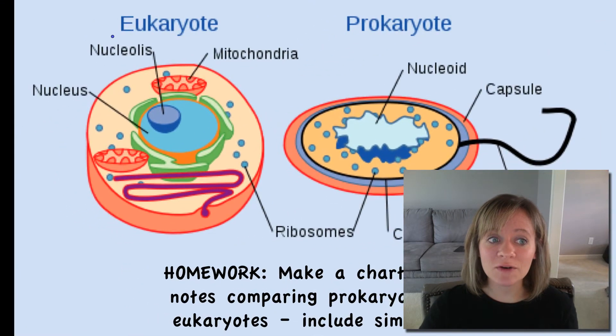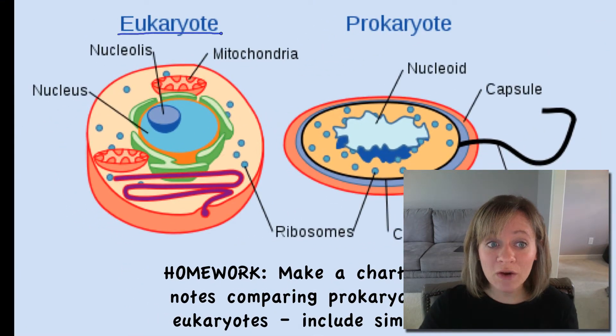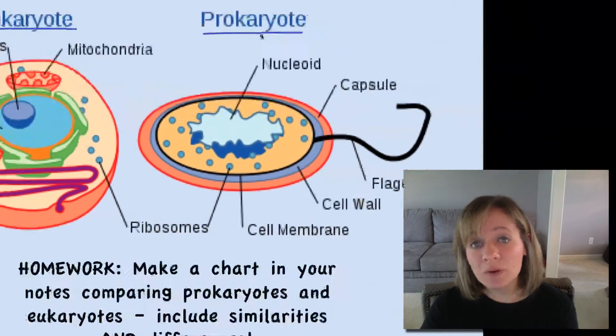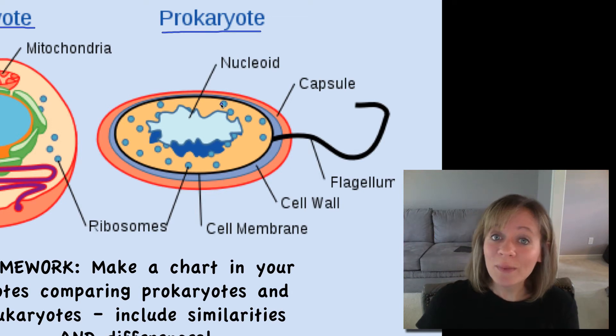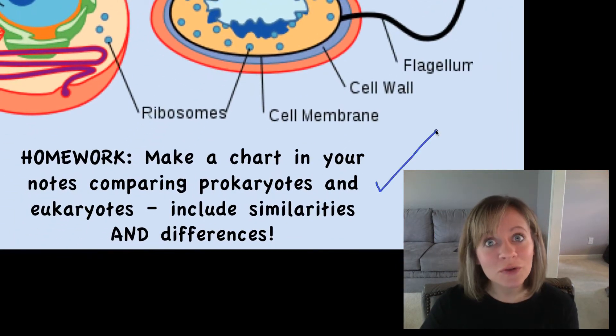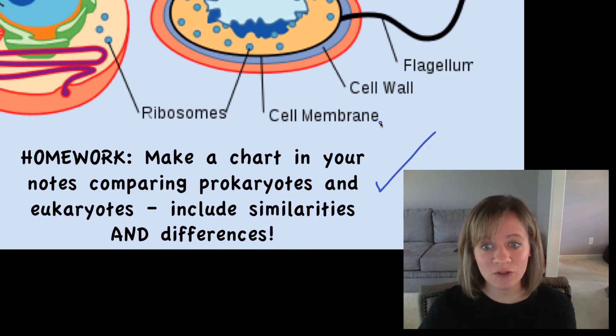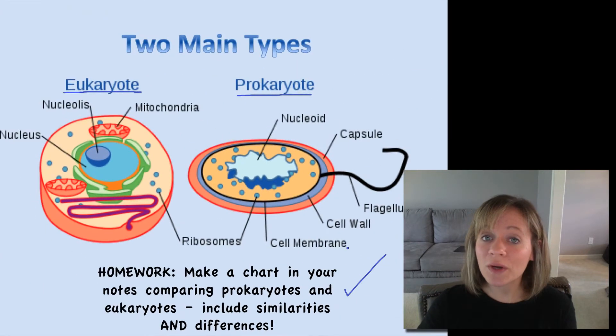There are two main types of cells. We call the first type a eukaryote and the second type a prokaryote. Now our bodies are composed of eukaryotic cells and they have things like nucleus, they have membrane-bound organelles, they have a plasma membrane, they have ribosomes. And then prokaryotes are things like bacteria and they lack some of the functions of eukaryotes. Now, I would love to tell you all about these, but I would rather you go ahead and do it. So for homework, I would like you to make a chart in your notes comparing prokaryotes and eukaryotes includes similarities and differences.